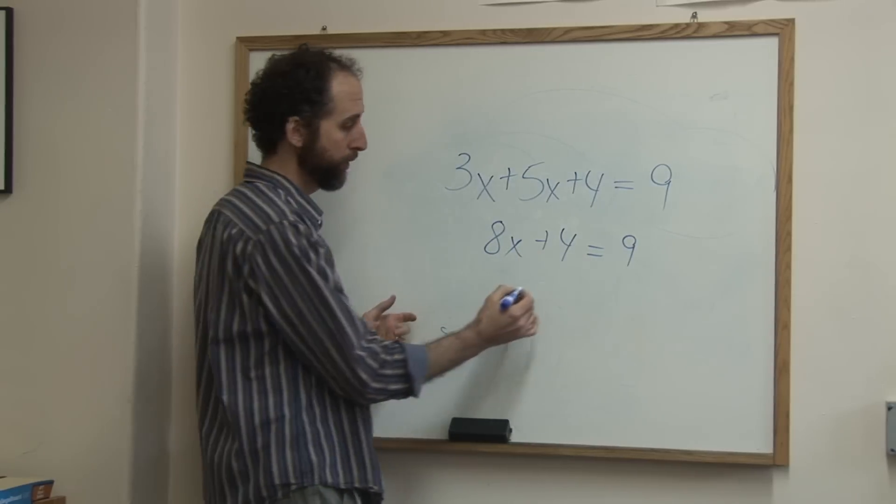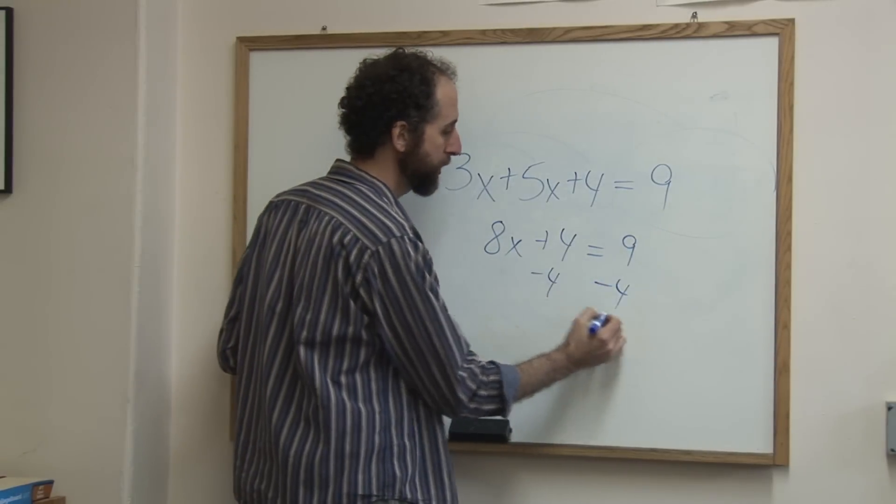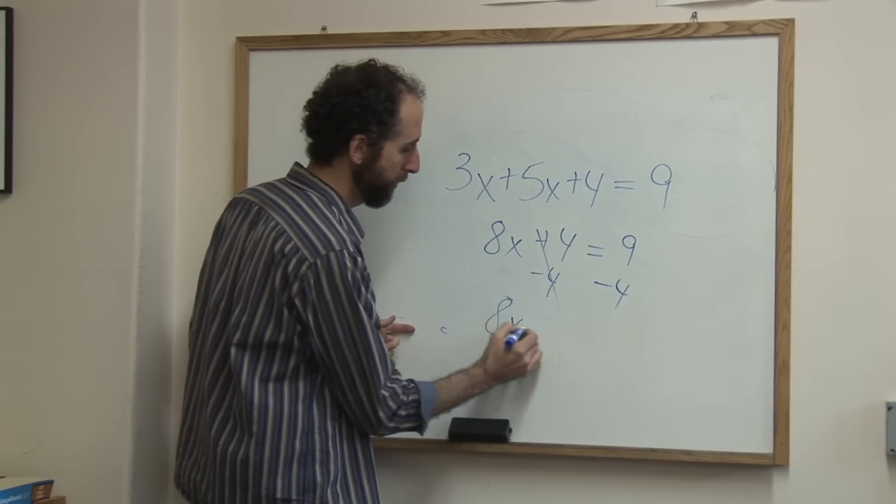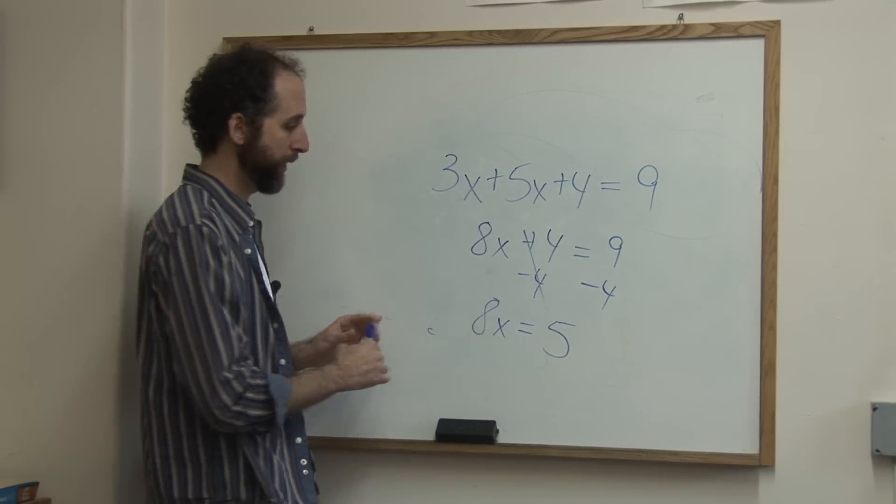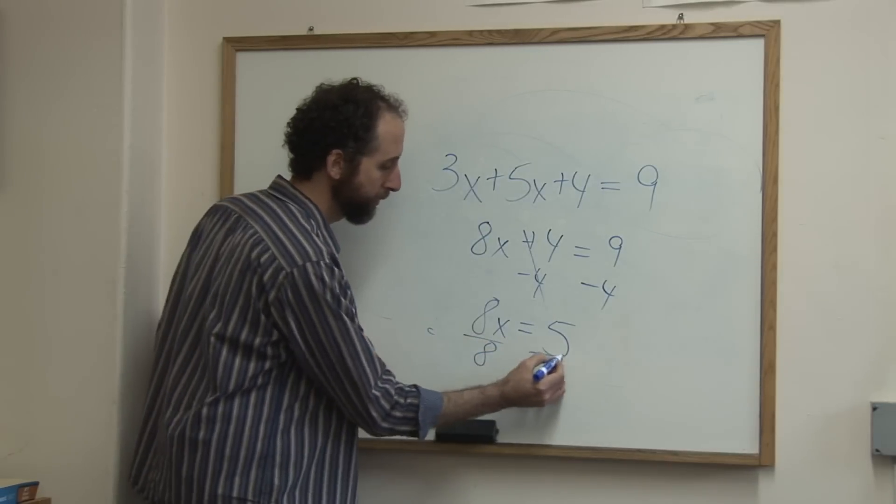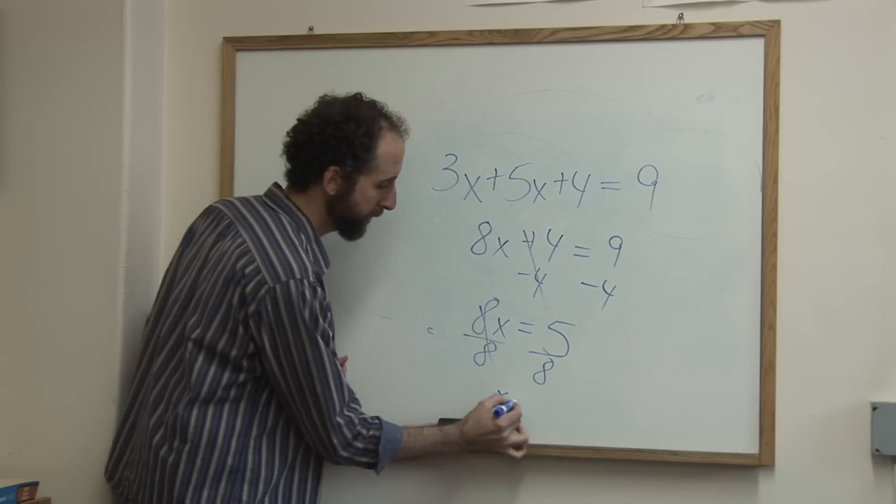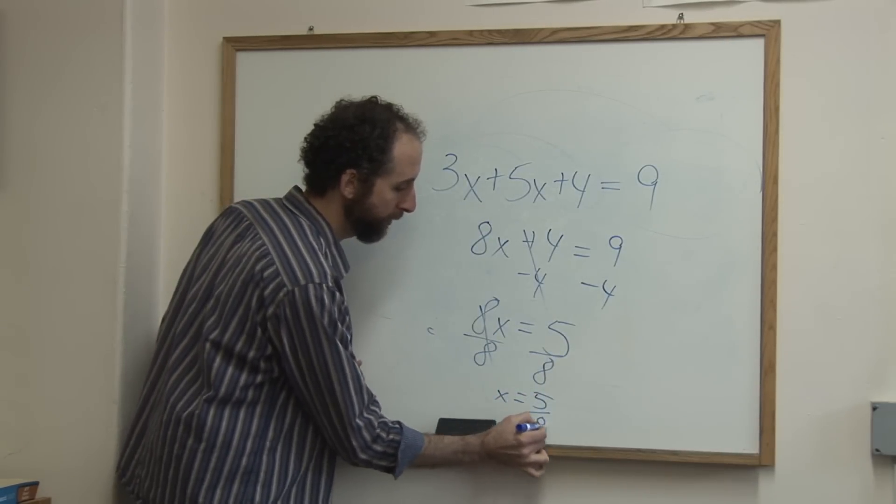Now I want to get x alone, so I'm going to subtract 4 from both sides, 8x equals 5, and then now I'm going to divide both sides by 8 to give me x equals 5 eighths.